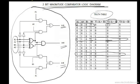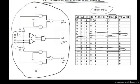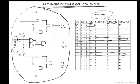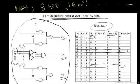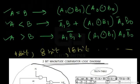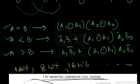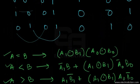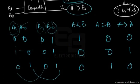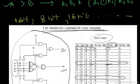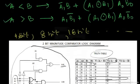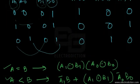In summary, this covers the operation of the two-bit magnitude comparator. Please watch our next tutorial on digital electronics. Until then, reflect on the working principle of the magnitude comparator. Thank you and goodbye.